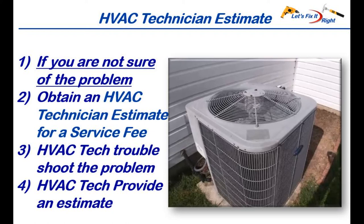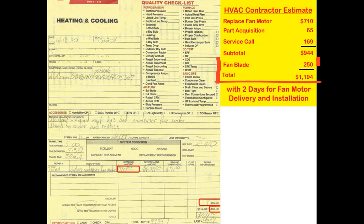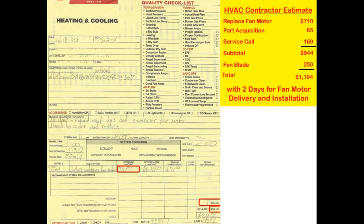If you're not sure of the problem and want to fix the air conditioner yourself, you may want to have an HVAC technician charge a service fee, troubleshoot the problem, and give you an estimate before moving forward with the repair. In this case I did this. My wife called an HVAC contractor who gave us a $944 bid to change the fan motor, then called later to upgrade his quote by $250. He said he needed to add a new fan blade because he thought the old blade was permanently corroded to the motor shaft, which I later found not to be true. Our air conditioner was only nine years old and this was the fifth visit from this HVAC contractor — so $1,100 for a fan motor replacement is outrageous.